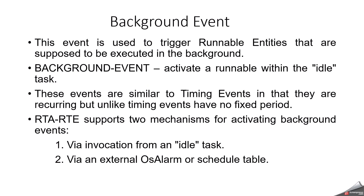The background event is used to trigger a runnable entity that should execute in the background — whenever the OS is idle. You can use it when a task will take a long time, such as writing more than one or two thousand bytes, or when the task is not time-critical and should only run during idle time. These events are similar to timing events in that they recur, but unlike timing events they have no fixed period.